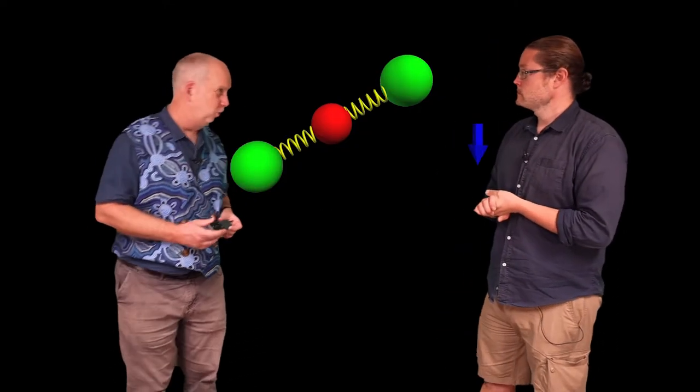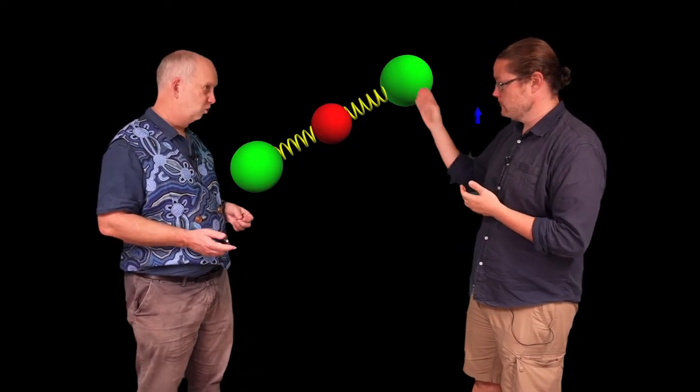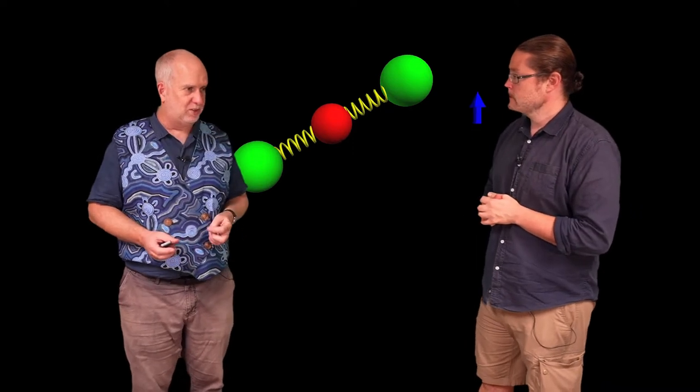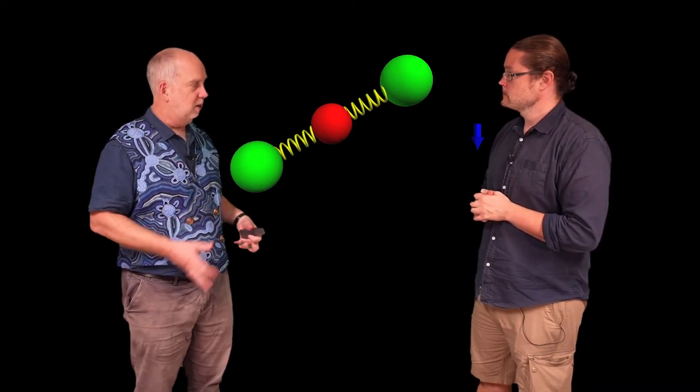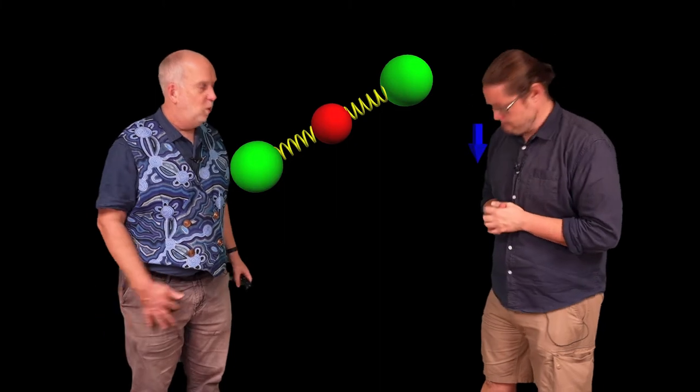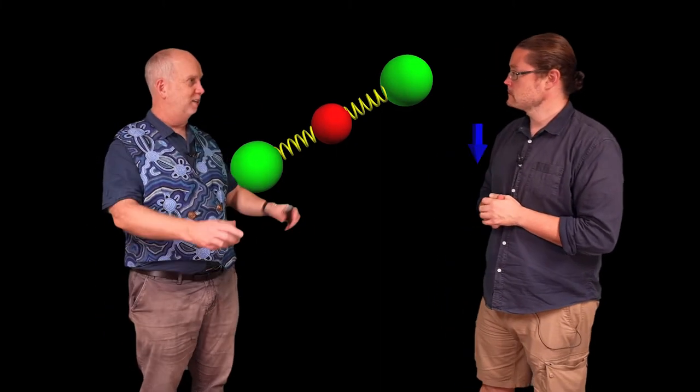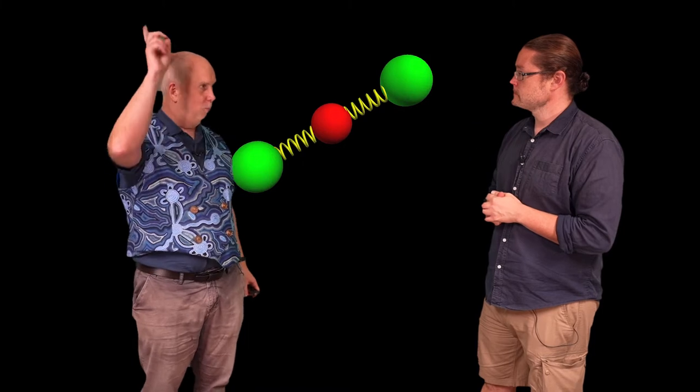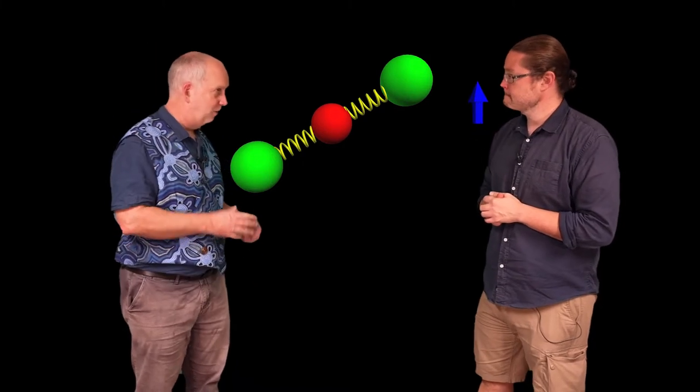So here is a carbon dioxide molecule. So we have one carbon in the middle and two oxygen. And what I'm going to do is I'm going to apply light to it. Now light's an electromagnetic wave which basically means it's an electric field which oscillates. So the electric field is going to push upwards and then downwards and upwards as the wave goes past.